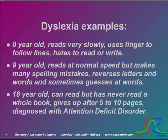Here are some typical examples. We have an 8-year-old who still reads very slowly after several years at school, uses his finger to follow the line, and who simply hates to read or write. Then we have a 9-year-old who reads at normal speed but who makes many spelling mistakes, who reverses letters and words, and sometimes simply guesses at words. And lastly, we have an 18-year-old young adult who can read very well but who has never finished a book and normally gives up after just a few pages. He has been diagnosed with Attention Deficit Disorder. We'll have a look at what may be the underlying causes of these three examples in this presentation.